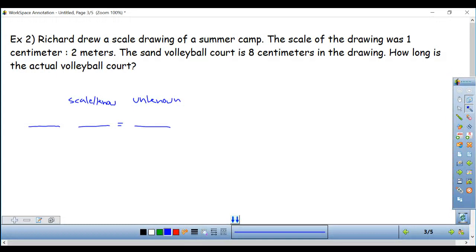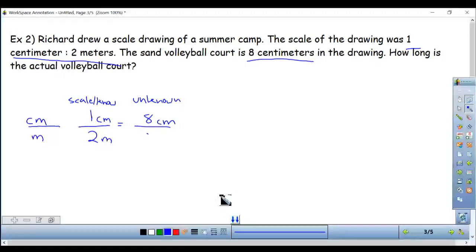Find my scale. It says the scale of the drawing was one centimeter is two meters and that's exactly what I'm going to put in my proportion. One centimeter, two meters. Centimeters got to go on top because that's what I put. Meters have to go on bottom because that's what I put. If you put two on top then all meters would be on top. If you put one on the bottom then all centimeters would be on the bottom. You could have done it either way. I just happened to put one on the top. Now let's look for my other number. The sand volleyball court is eight. Eight what? Eight centimeters. So centimeters with centimeters, and I'm looking for how long is the actual volleyball court in meters.